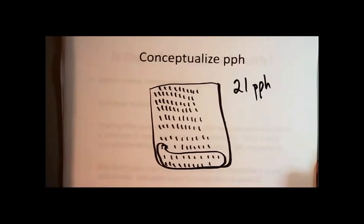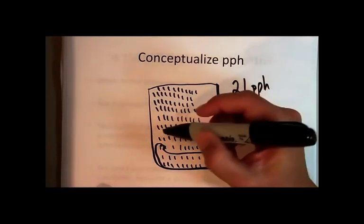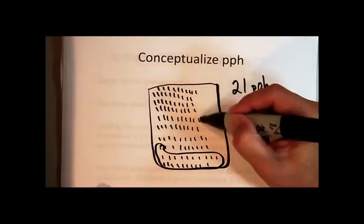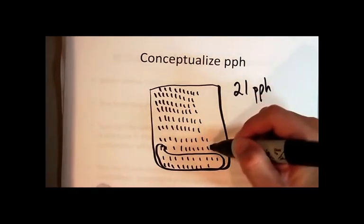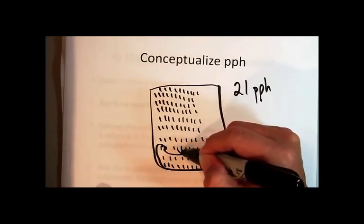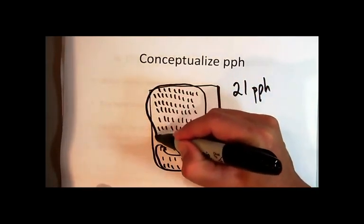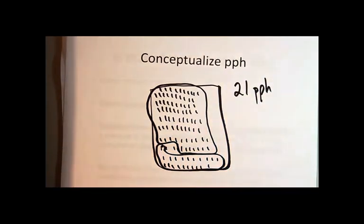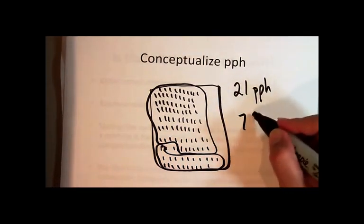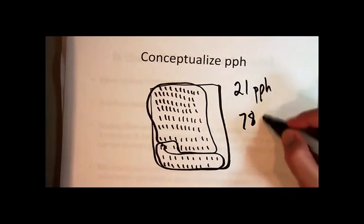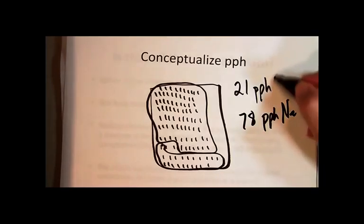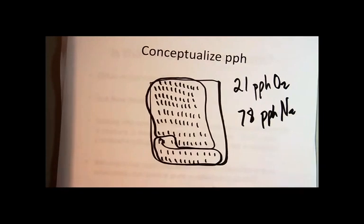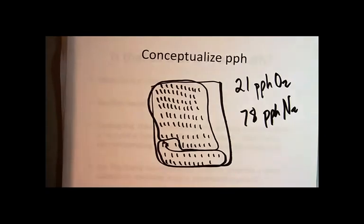Now, on that first slide also with the pie chart, what we said there was 78 percent, which would be the same as 78 parts per 100 nitrogen. So that would be my 78 parts per 100 nitrogen, 21 parts per 100 oxygen in air, in a normal air sample.